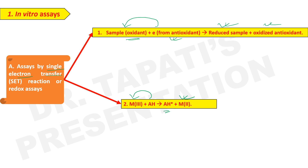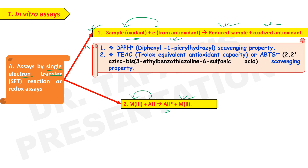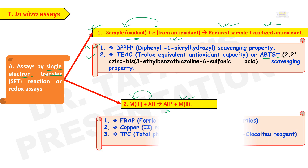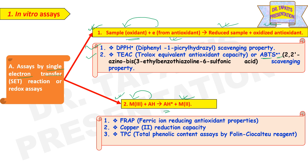Examples of the first category of SET reactions are DPPH (diphenyl-1-picrylhydrazyl) radical scavenging property, and TEAC — Trolox Equivalent Antioxidant Capacity — or ABTS radical cation (2,2'-azinobis-3-ethylbenzothiazoline-6-sulfonic acid) scavenging property. Examples of the second category are FRAP (ferric iron reducing antioxidant properties), copper reduction capacity, and TPC (total phenolic content) assayed by Folin-Ciocalteu reagent.